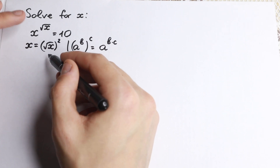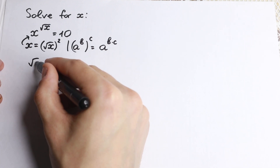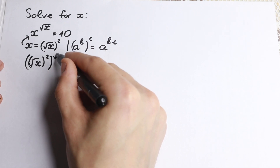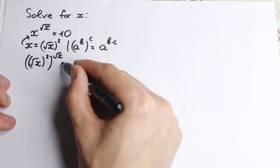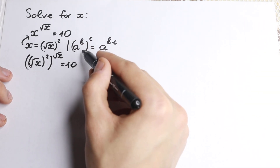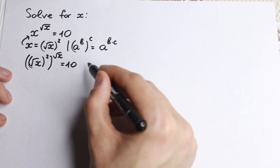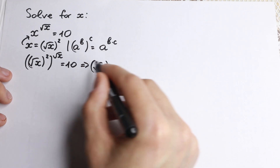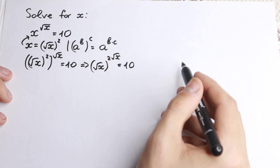Let's substitute x as square root of x squared. We change this x by square root of x squared, and we raise it to the power square root of x, equal to 10. So we have square root of x, squared, raised to the power square root of x. Then we multiply our powers using the rule a to the power b raised to the power c equals a to the power b times c. As a result, we have square root of x to the power 2 times square root of x, to the power square root of x, which equals 10.